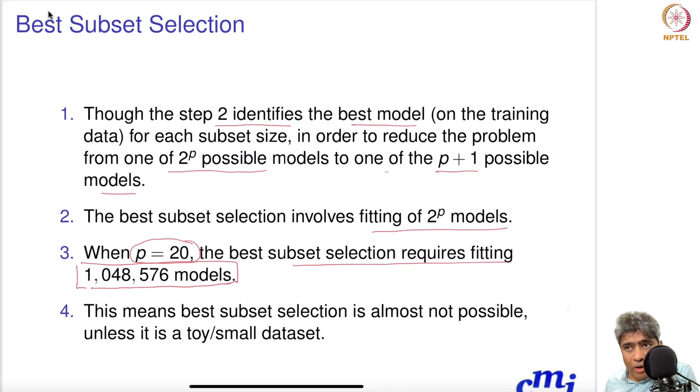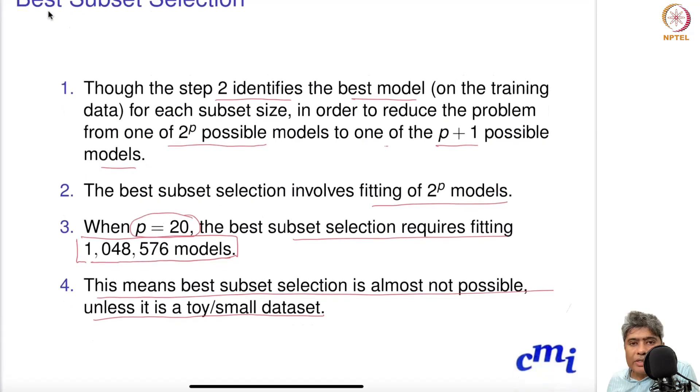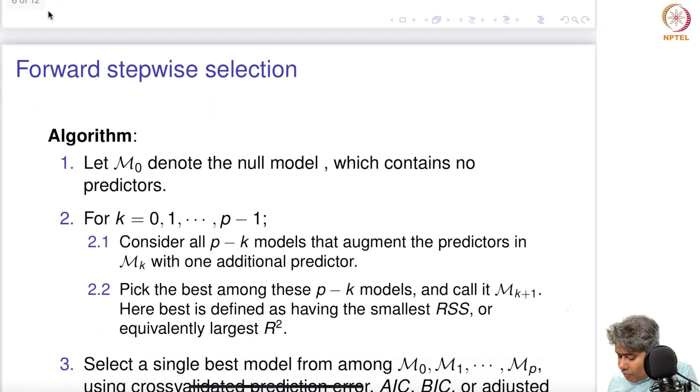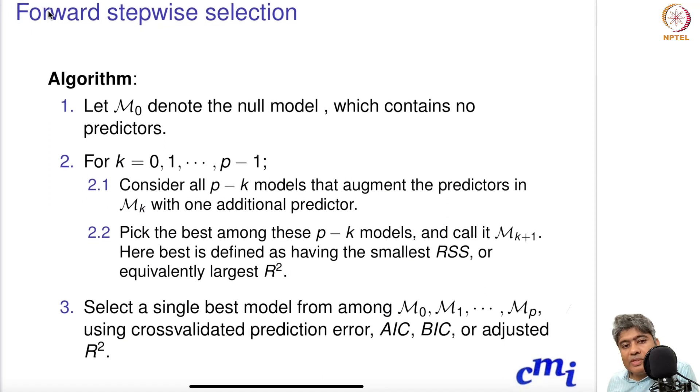If you do best subset selection on that, you have to fit 1 million models to get the best model out of it. So a huge number of models that you have to fit. For each model you have to calculate R² or root mean squared error, and based on that, select which model you want to choose as your best model. This means that best subset selection is almost not possible unless it's a toy data set or a small data set. That creates a problem for us. That is why forward stepwise selection comes in handy.